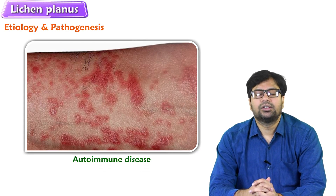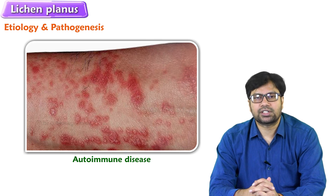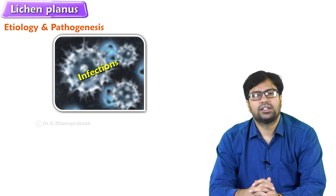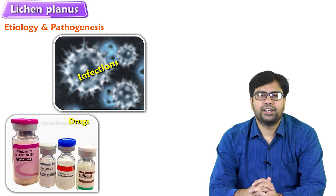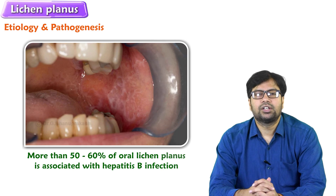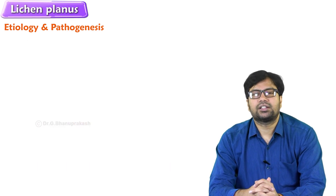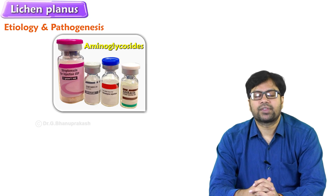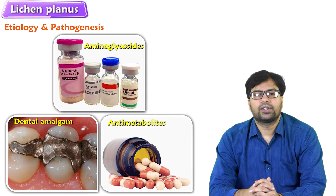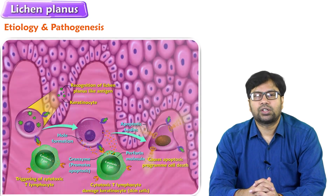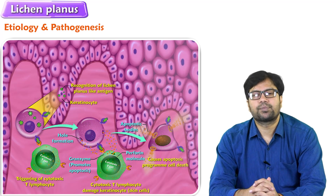What is the etiology and pathogenesis of lichen planus? Lichen planus is an autoimmune problem, but there are few things which may trigger the inflammatory process like infections, drugs, or any chemicals. Infections — more than 50 to 60 percent of oral lichen planus is associated with hepatitis B infections. Medications like aminoglycosylates, dental amalgam, and few antimalarial drugs may trigger lichen planus.